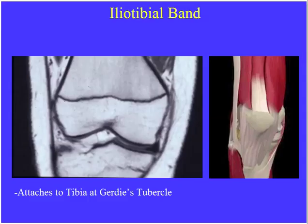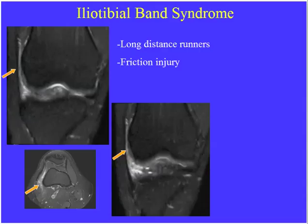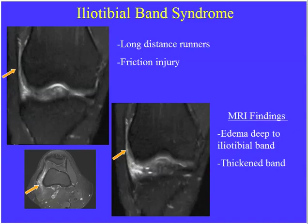Iliotibial band syndrome: the IT band comes down laterally and inserts on Gerdy's tubercle. On MR they show edema deep to the iliotibial band, visible on coronal and axial planes — an IT band friction syndrome occurring in long-distance runners. There may also be reactive marrow edema within the adjacent lateral femoral condyle.